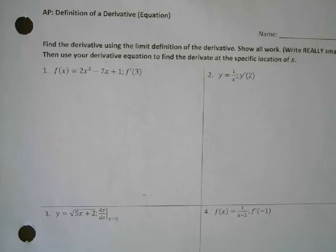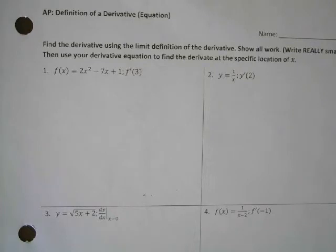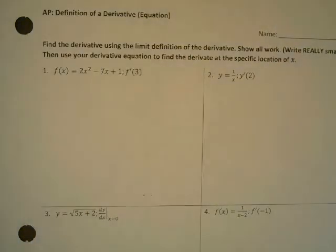Write really small because you have a lot of simplifying work that you have to show. You have to write 'limit' every single time, because if you don't on the AP test, they will mark you down — you will not get any points for the whole problem because your notation is incorrect. So go ahead and write the formula at the top of the page so that you have it to refer back to.